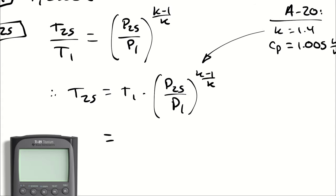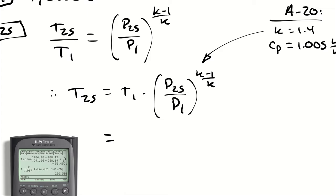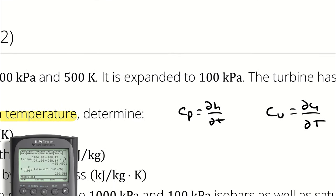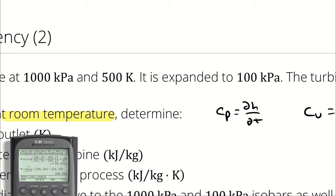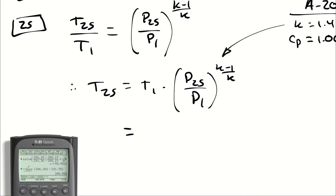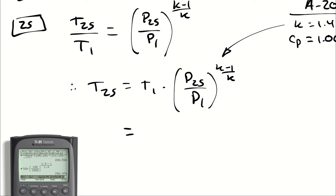Now, T1 was 500 Kelvin, so I'm going to take 500 Kelvin multiplied by P2S. It was expanded to 100 kilopascals. Divided by P1, which was 1,000 kilopascals, and then I'm raising that to the power of K minus 1, so 1.4 minus 1, divided by K, which is 1.4. The T2S value that I get as a result is 258.974.